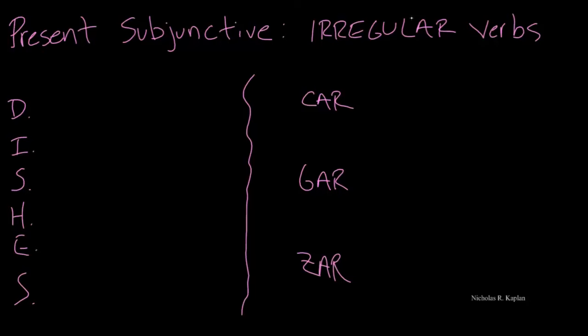When we're working with the present subjunctive, one of the things we want to know is whether or not there are any irregular verbs. But before we get to the irregular verbs, let's just go through a quick review of how to form verbs in the present subjunctive.